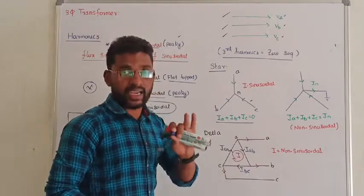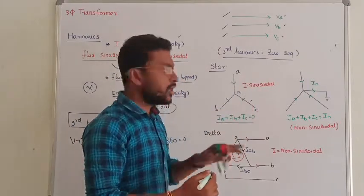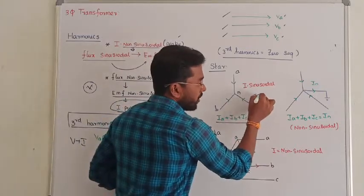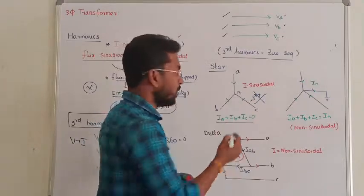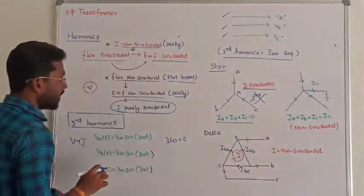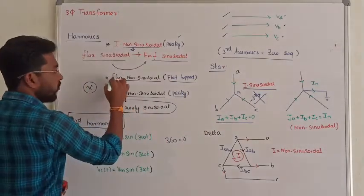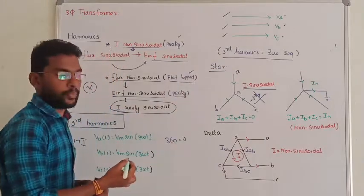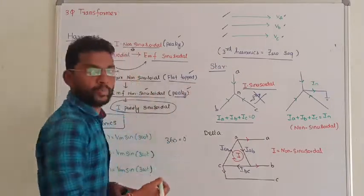Since the neutral line is not connected in a star-connected system without neutral, you cannot see the effect of third harmonics. With no third harmonic effect, the current will be purely sinusoidal. The conclusion: in such a system, the flux is non-sinusoidal and flat in nature, while the EMF is also non-sinusoidal and peaky in nature.